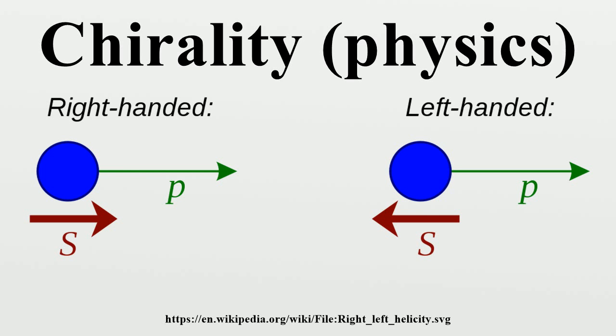All other observed particles have mass and thus may have different helicities in different reference frames. It is still possible that as yet unobserved particles, like the graviton, might be massless, and hence have invariant helicity like the photon.